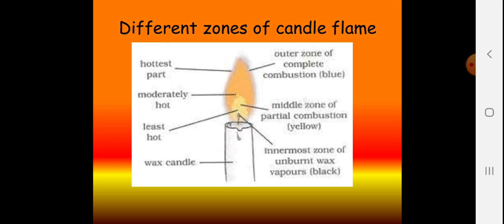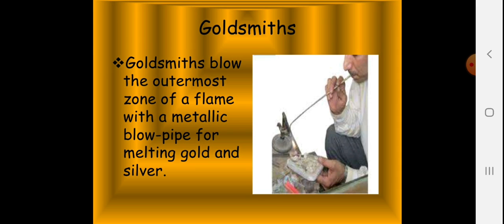On your gas stove, if the flame burns blue it means the highest amount of heat energy is produced and food can be cooked in less time. If the flame is yellow or orange, the burner is not providing sufficient oxygen, resulting in incomplete combustion. A goldsmith blows the outermost zone of the flame with a metallic blowpipe for melting gold and silver, because by blowing they provide more oxygen, raising the temperature so gold can be molded into different shapes of ornaments.